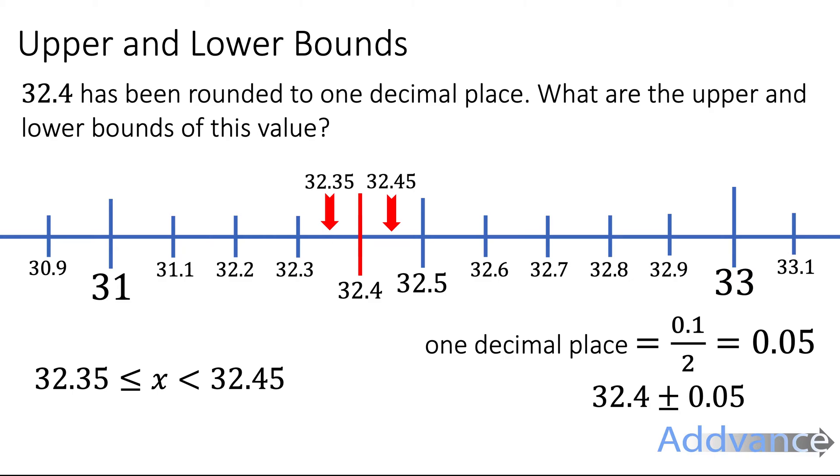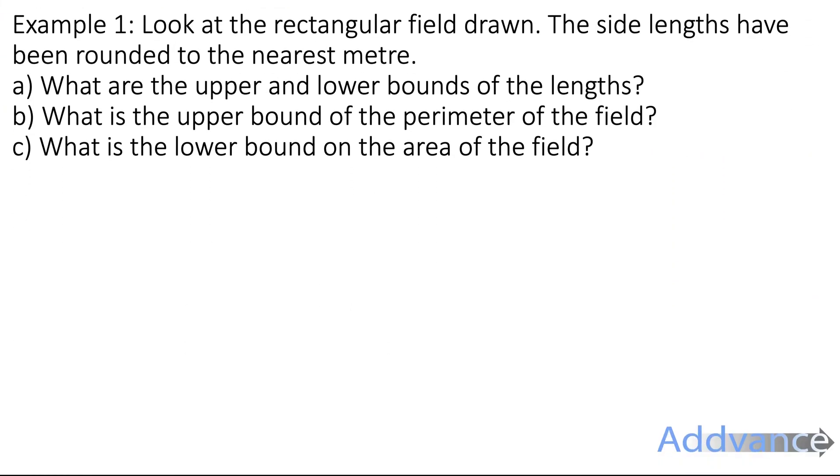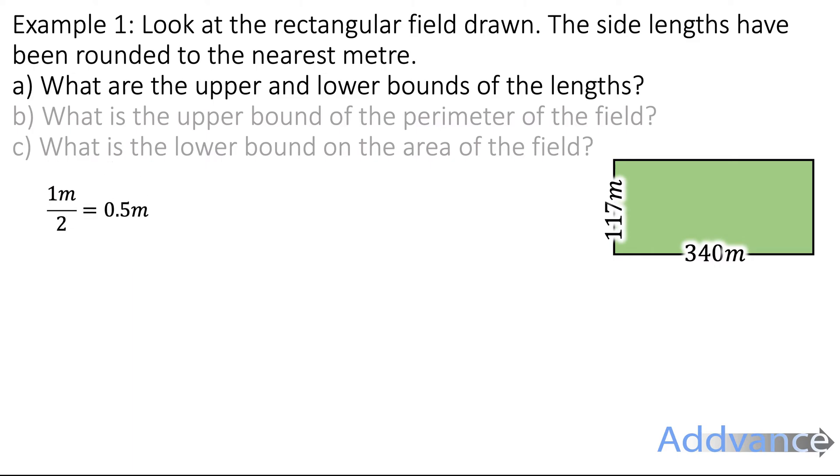Now let's look at an exam question. Example one: look at the rectangular field drawn. The side lengths have been rounded to the nearest metre. What are the upper and lower bounds of the lengths? The two lengths are 117 metres and 340 metres. They've been rounded to the nearest metre, so we start by halving a metre. A metre divided by 2 is 0.5, and we add or subtract 0.5 from the lengths.